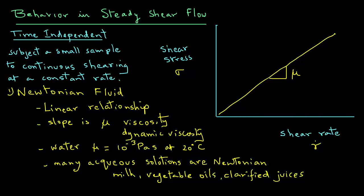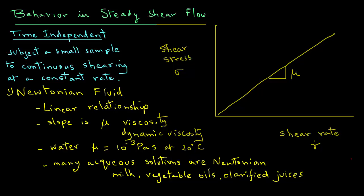So the relationship in case of a Newtonian fluid between shear stress and shear rate is sigma equals mu times gamma dot. This tells us the behavior of Newtonian fluids in steady shear flow.